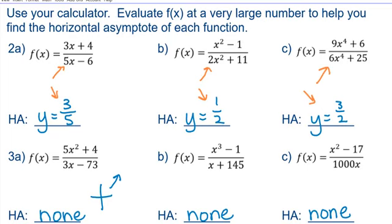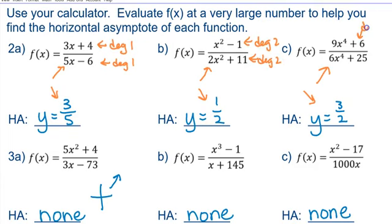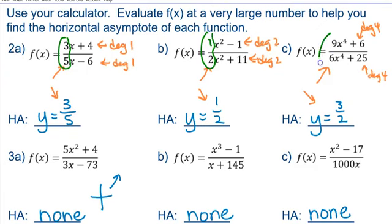Now let's look at number 2 and focus on the degree. In 2a, the degree of the numerator is 1 and the denominator also has degree 1. In part b, the degree of the numerator is 2 and the degree of the denominator is 2. In part c, the degree of the numerator is 4 and the degree of the denominator is 4. Same degree every time! When the numerator is growing at the same rate as the denominator, the horizontal asymptote is just the ratio of the leading coefficients: 3 over 5, 1 over 2, 9 over 6.